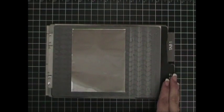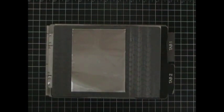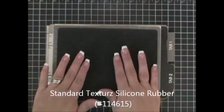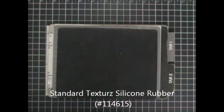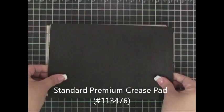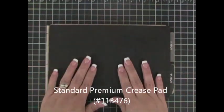Then I am going to take my silicone rubber mat and I am going to carefully place it on top. I am not going to move anything. Then I will take my standard premium crease pad and I will place that on top. And there is my sandwich.